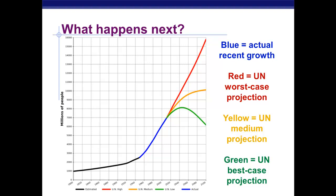One of the things that contributes to a lower birth rate is improved education for women around the world, since well-educated women tend to have fewer children. So if we improve education for women, especially in developing countries, we might lower the birth rate enough to reverse some of our population growth.